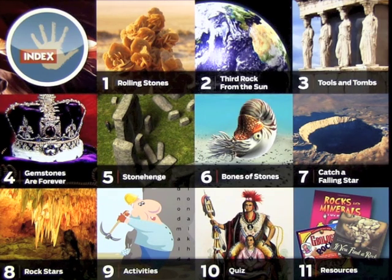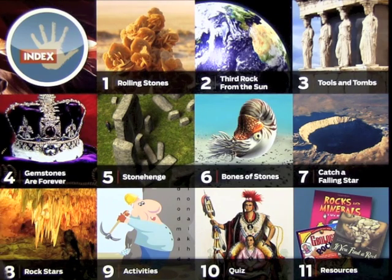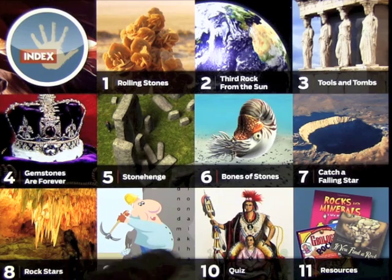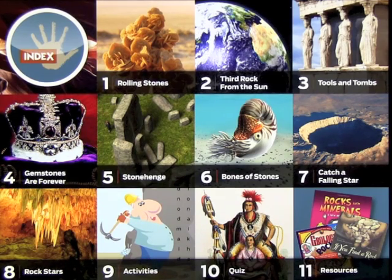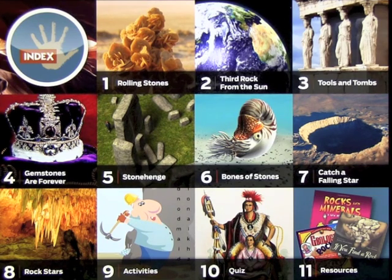When you come to the main index, we've got 11 different chapters within this app — Rolling Stones, Through Bones and Stones, Stonehenge — and then we've got Activities, Quiz, and a Resource section down the bottom. You can access them in order or click on them to jump directly, so I'm going to show you a couple of these and how they work.